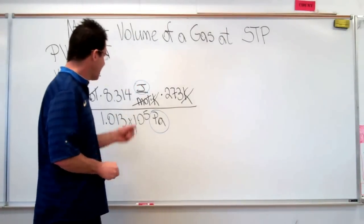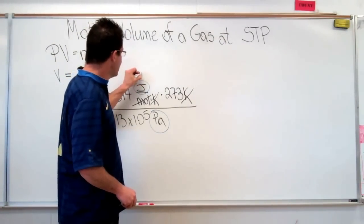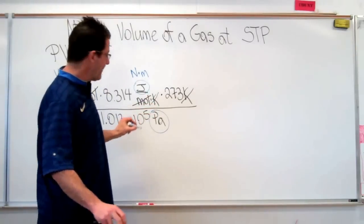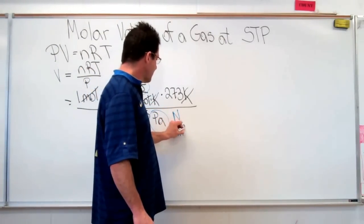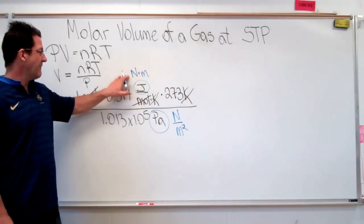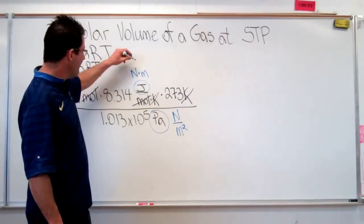We know that a joule is equivalent to a Newton meter. And that a Pascal is the same thing as a Newton per meter squared. So you can see we have Newton meter and Newtons over meters squared. We have a Newton on the top.